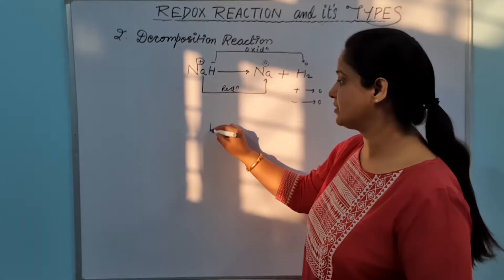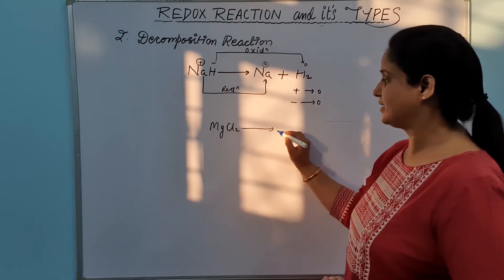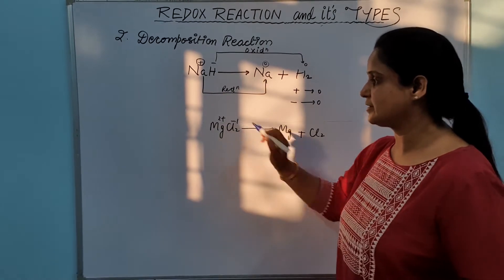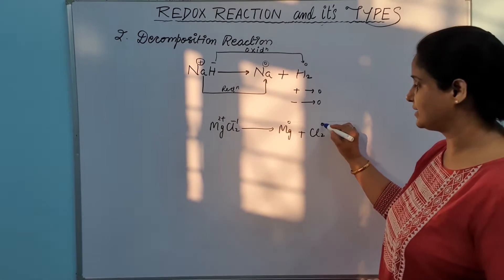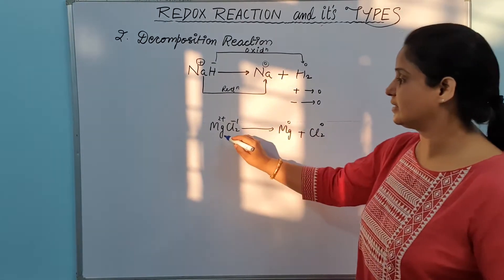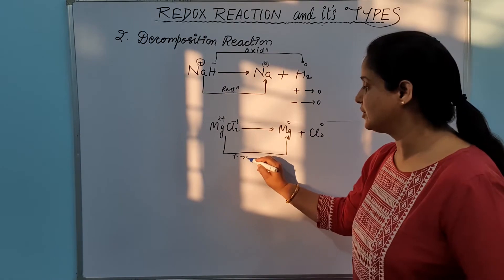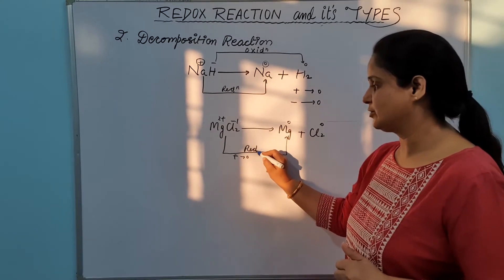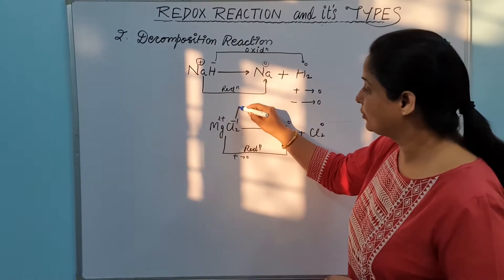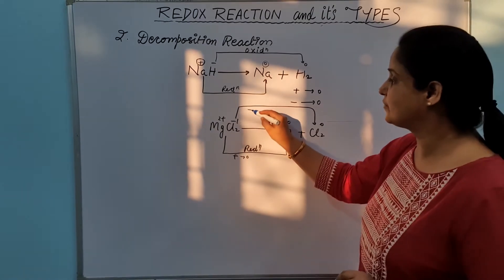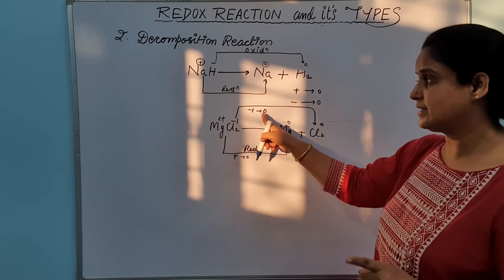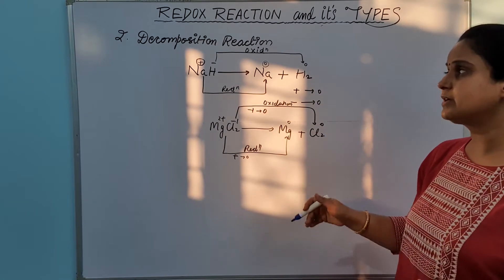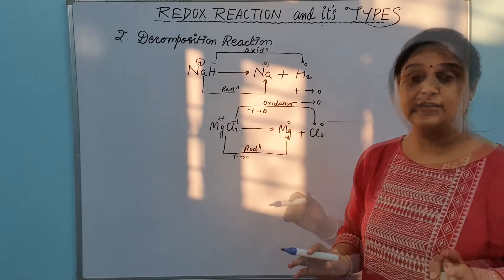Similarly, MgCl₂ decomposing into Mg + Cl₂: magnesium is at +2 oxidation state in MgCl₂ and chlorine is at −1. After decomposition, both are at 0 (elemental state). Magnesium changes from +2 to 0 — decrease in oxidation state, so it is reduction. Chloride changes from −1 to 0 — increase in oxidation state, so it is oxidation. Most decomposition reactions are redox reactions, but not all.